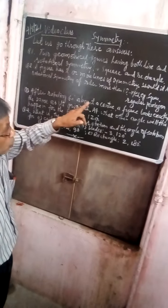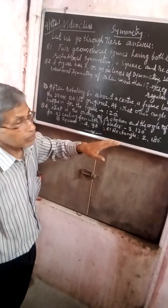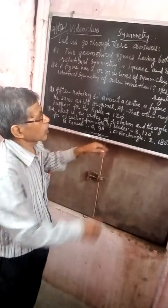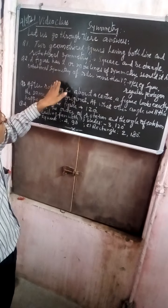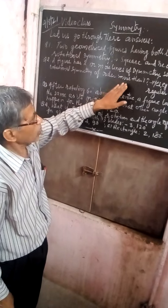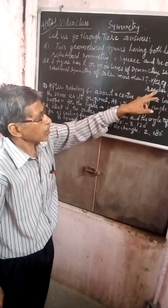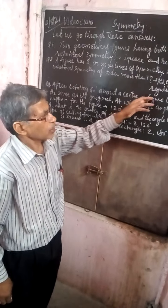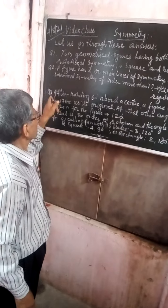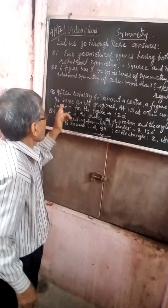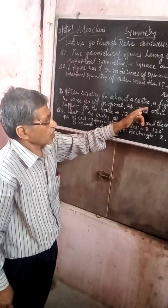See another question: a figure has two or more lines of symmetry — should it have rotational symmetry of order more than one? Go through the answer: yes, it should have rotational symmetry of order more than one. Such examples are that of a square and that of a regular rectangle.